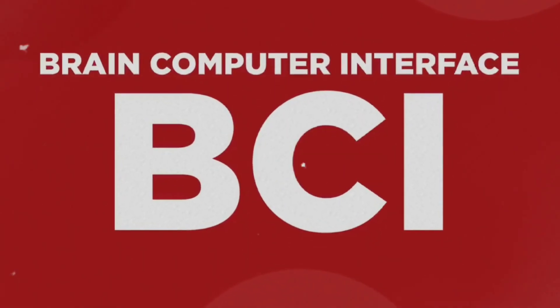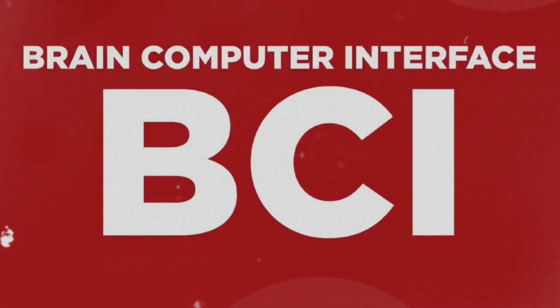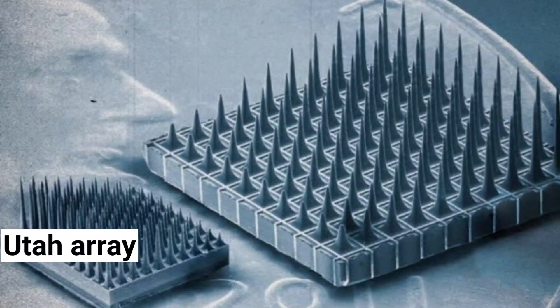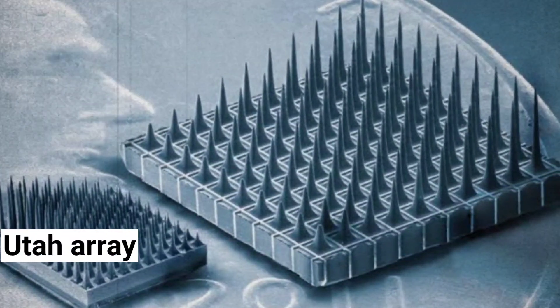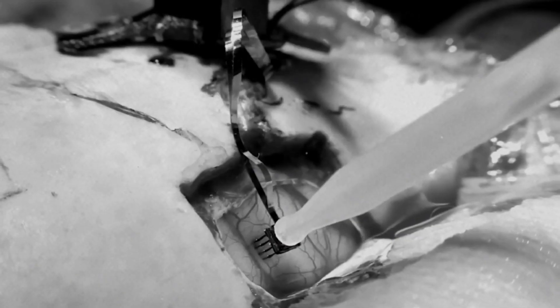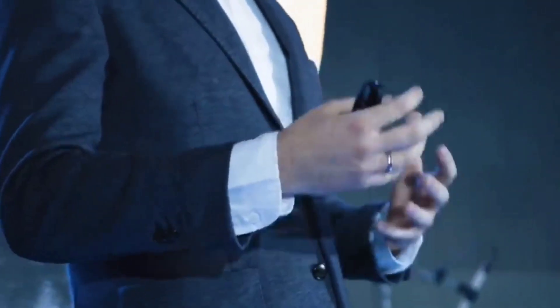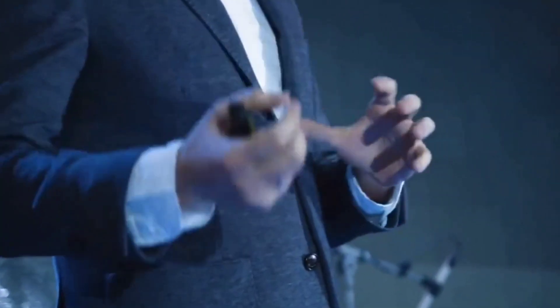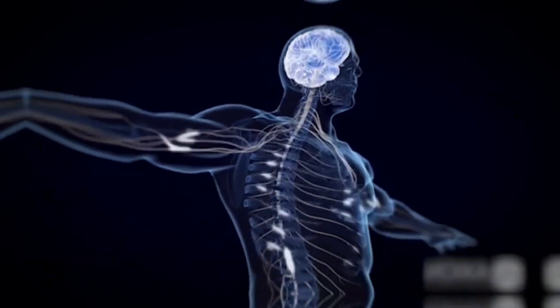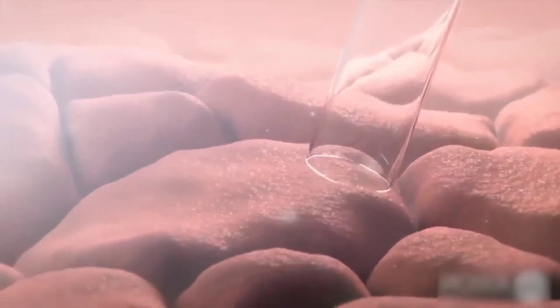The current industry advancement of BCI is the Utah Array. The Utah Array is a computer chip with several white spikes that come out of it. This might sound crazy, but these will go into the human brain by cutting down a chunk of the skull. What are your opinions on this insane idea? Call it advancement or craziness, but this is how far our technology has come.